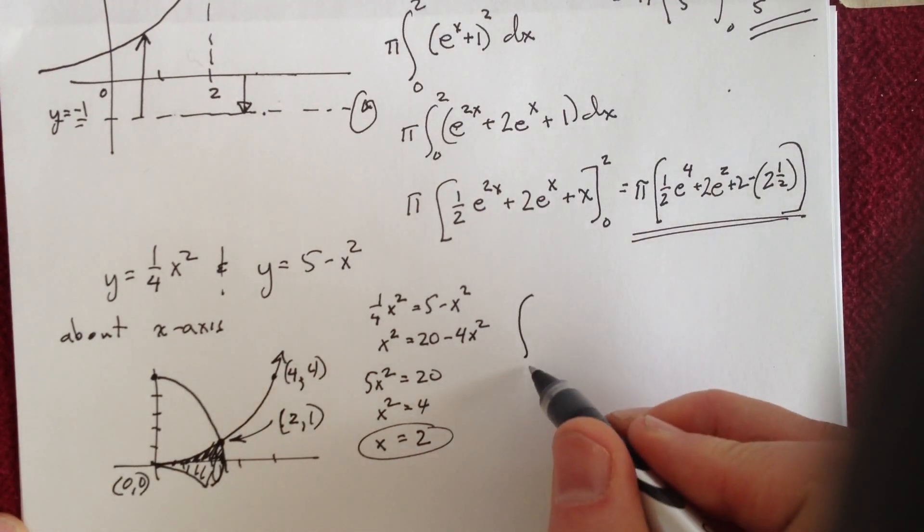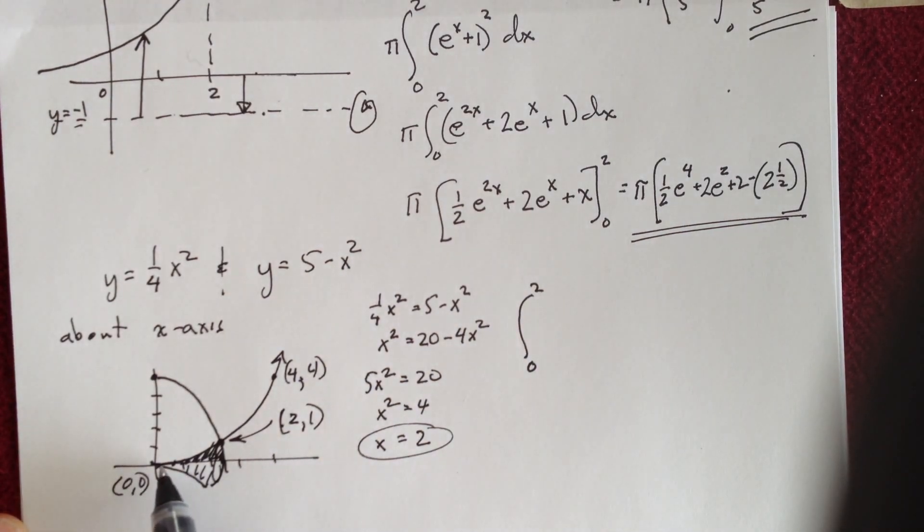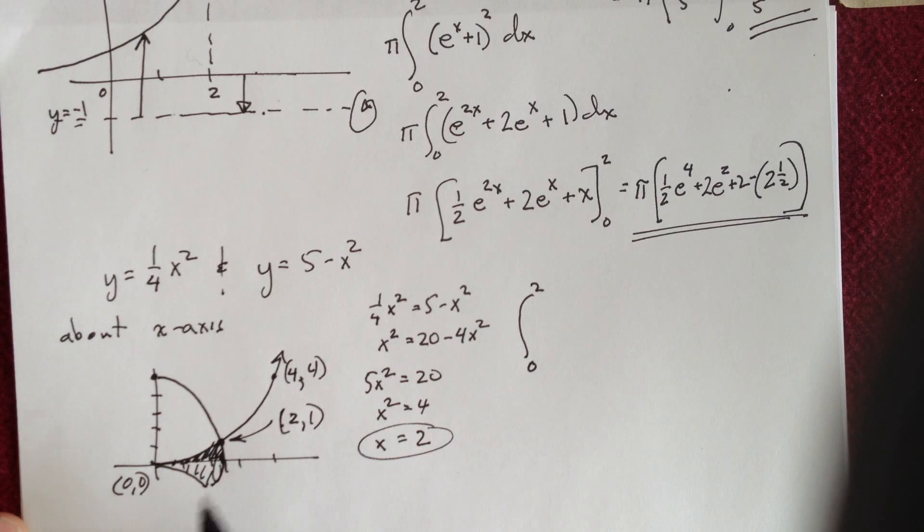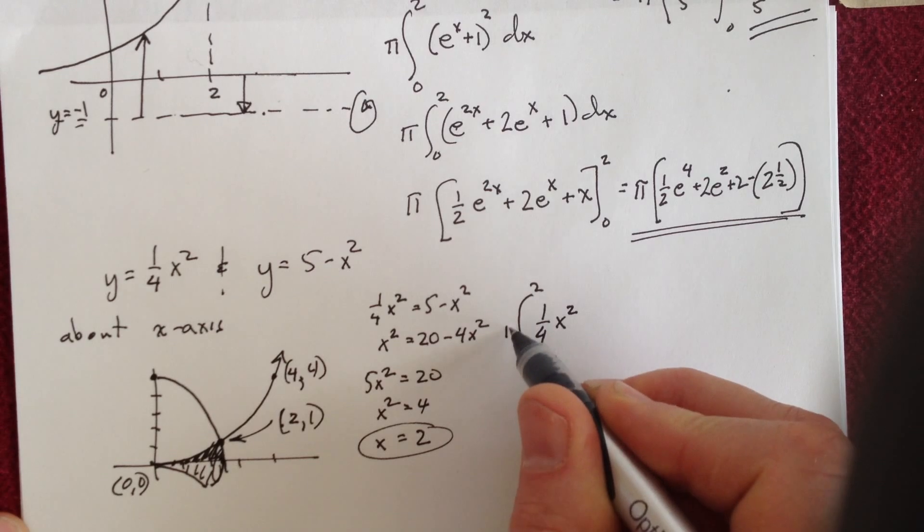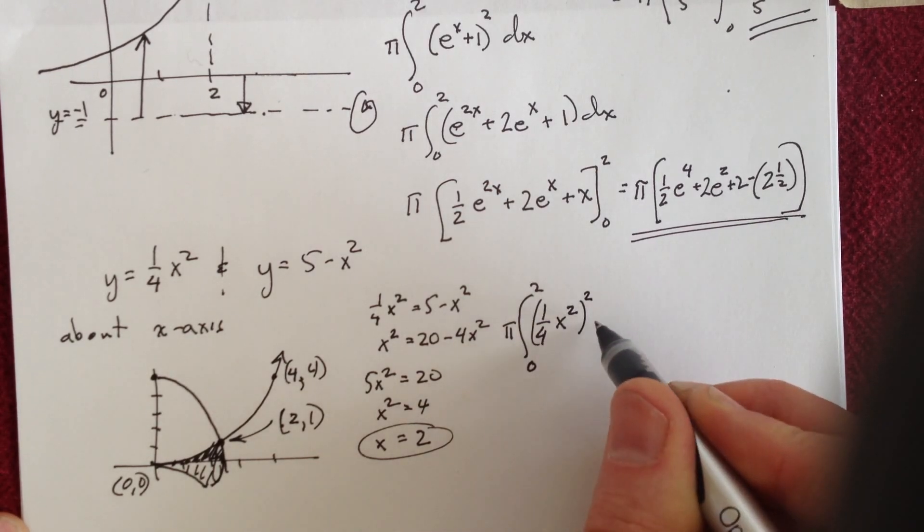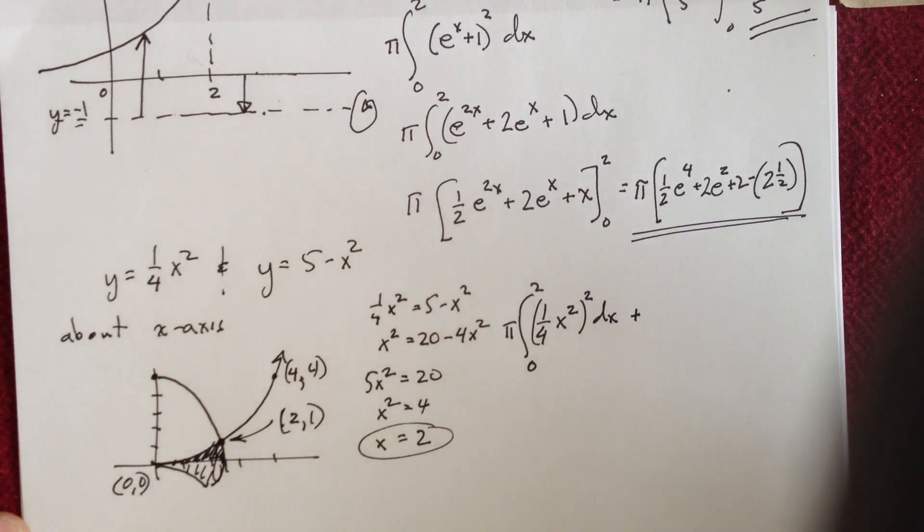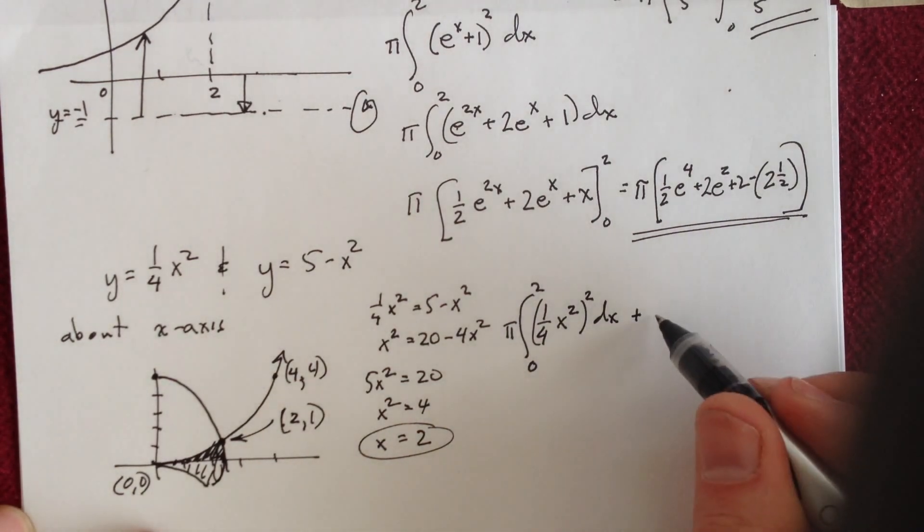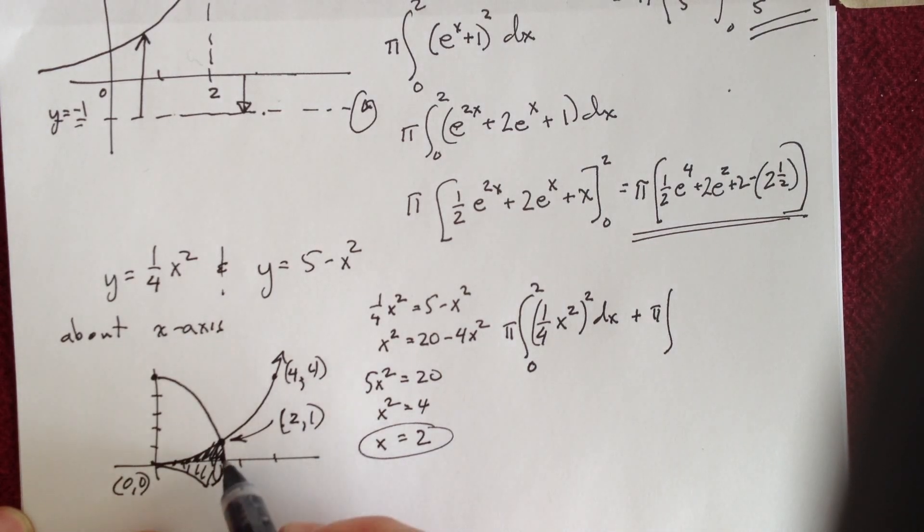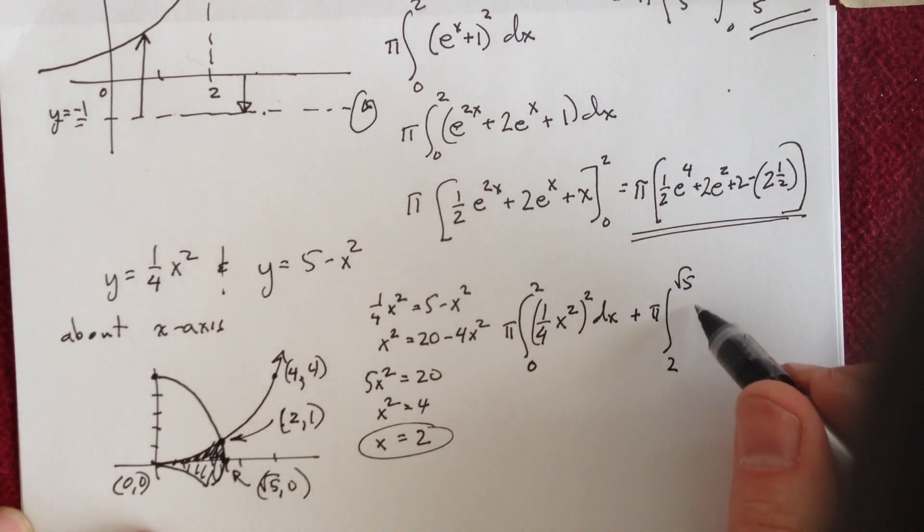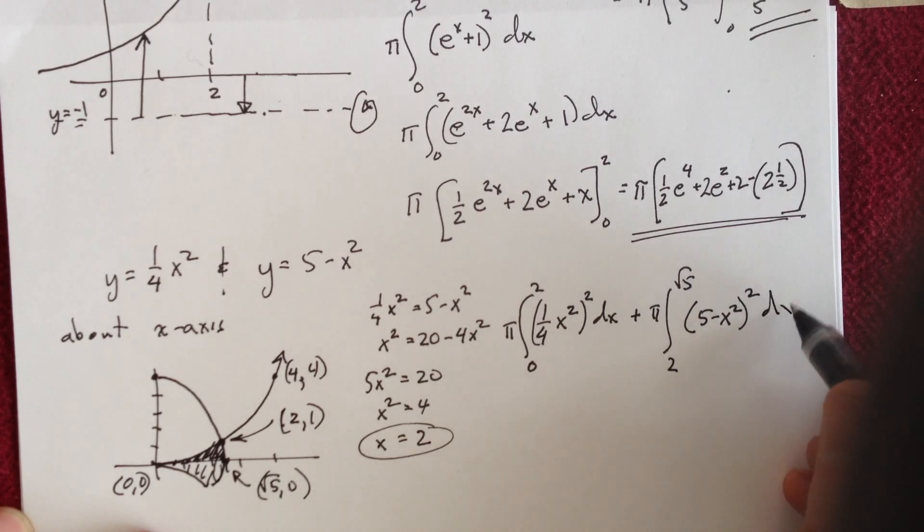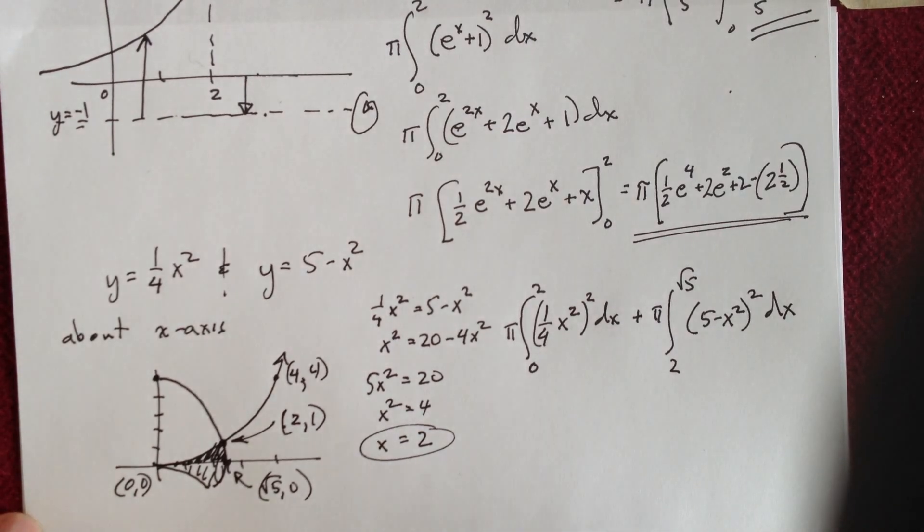It'll be one integral from 0 to 2, and in this case, it's just my first curve revolved, so that's relatively straightforward, 1 fourth x squared, pi is on the outside, this whole thing is squared, dx, and then I'm going to add that to my other integral, which is pi again times, and here it's starting at 2, and going to this 0 here, which is when x is radical 5, I get a 0, so I'm going from 2 to radical 5, and then that's my other function, 5 minus x squared squared dx, so I have those two integrals to do.